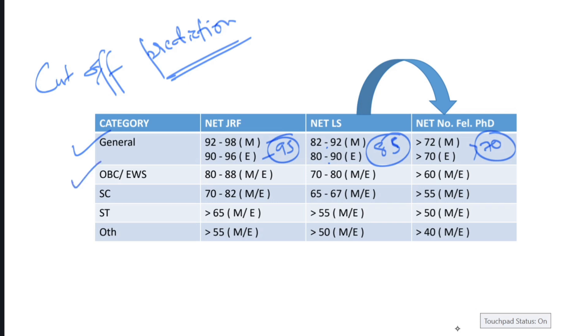For OBC, the NET JRF qualification might be lying around this region, 82 to 88. The same can be applied for EWS. You can predict plus minus 1 or 2. This range can be predicted for OBC and EWS. You will be saying that EWS and OBC categories are different, but still the marking difference will be lying at only plus minus 1 to 2 range. So you can predict it to be around 80 to 88 for OBC category, 70 to 80 for NET LS, and if you get around over 60, you can be assured of NET qualification this time.